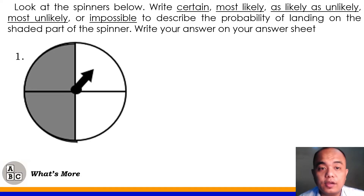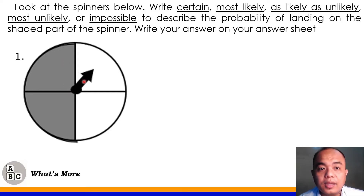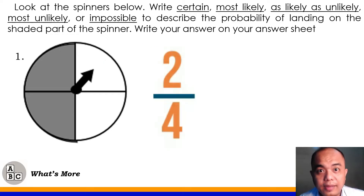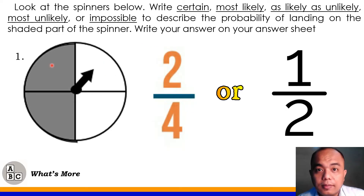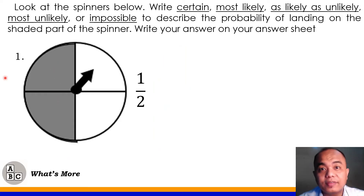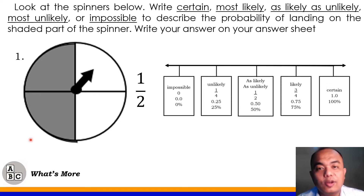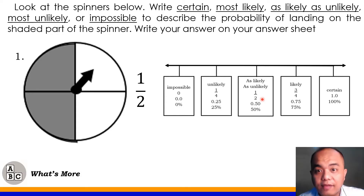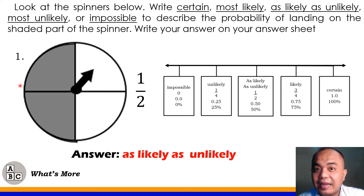Let's have number 1. As you observe here, our spinner is divided into 4 parts. But out of 4 parts, only two are shaded. The shaded part is what we will get the probability of. When this spins, what is the probability that the pointer will land on the shaded part? We have two shaded parts, and that is equal to 2 fourths. We can reduce this into lowest term — we can also say that this is 1 half. So half of the circle is shaded. Using our probability scale, it is located in the middle. The chance of landing on the shaded part is 50% or 0.5 or in fraction form, 1 half. So the answer for number 1 is as likely as unlikely — there is a 50% chance that our pointer will land on the shaded part.